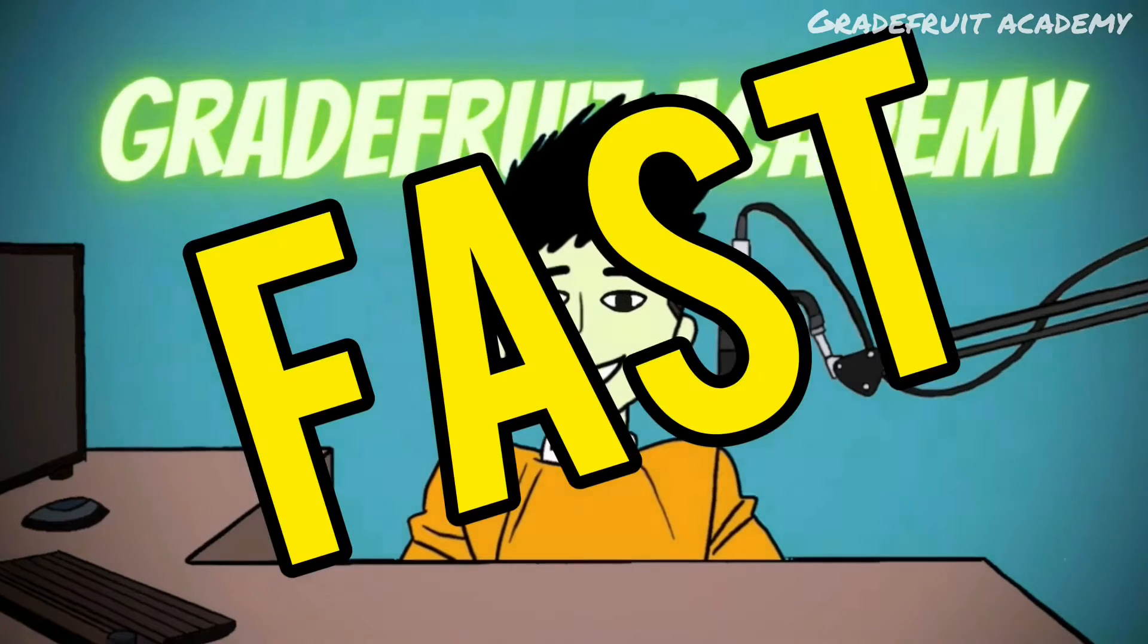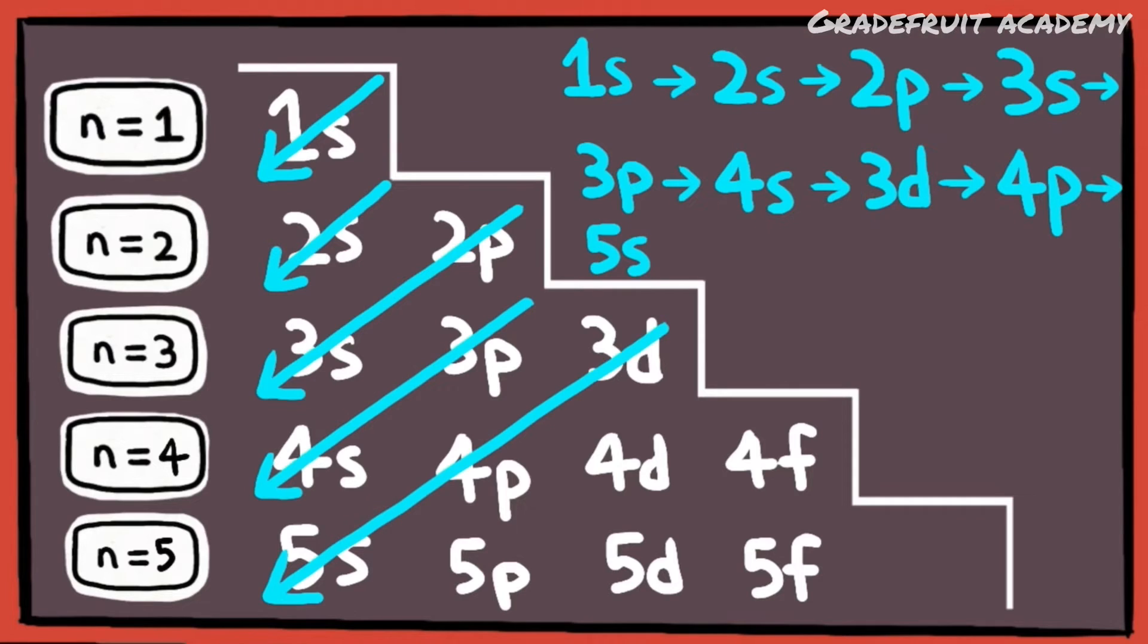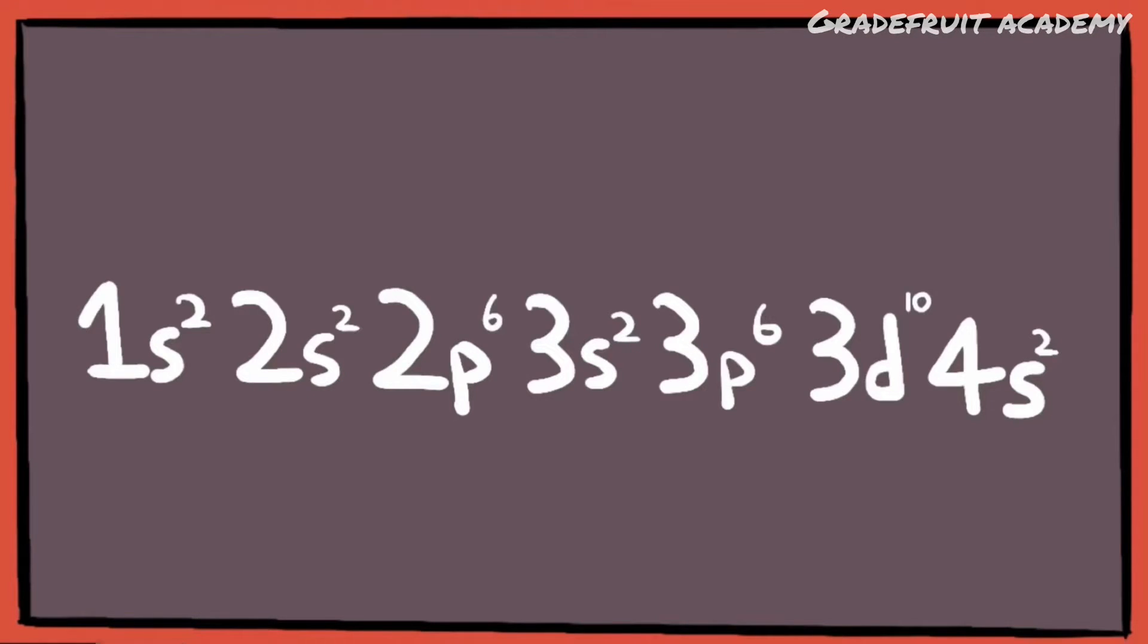I'm gonna show you how to do it fast. What you want to do is first memorize the flow of fully filled orbitals up to the 4s orbital.